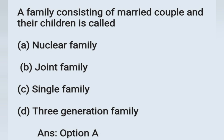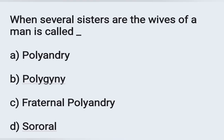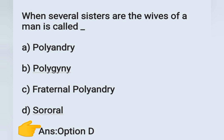The next question: when several sisters are the wives of one man, it is called — Options: A) Polyandry, B) Polygyny, C) Fraternal polyandry, D) Sororal. When more than one sister is the wife of a man, it is known as sororal. Option D is the correct answer.